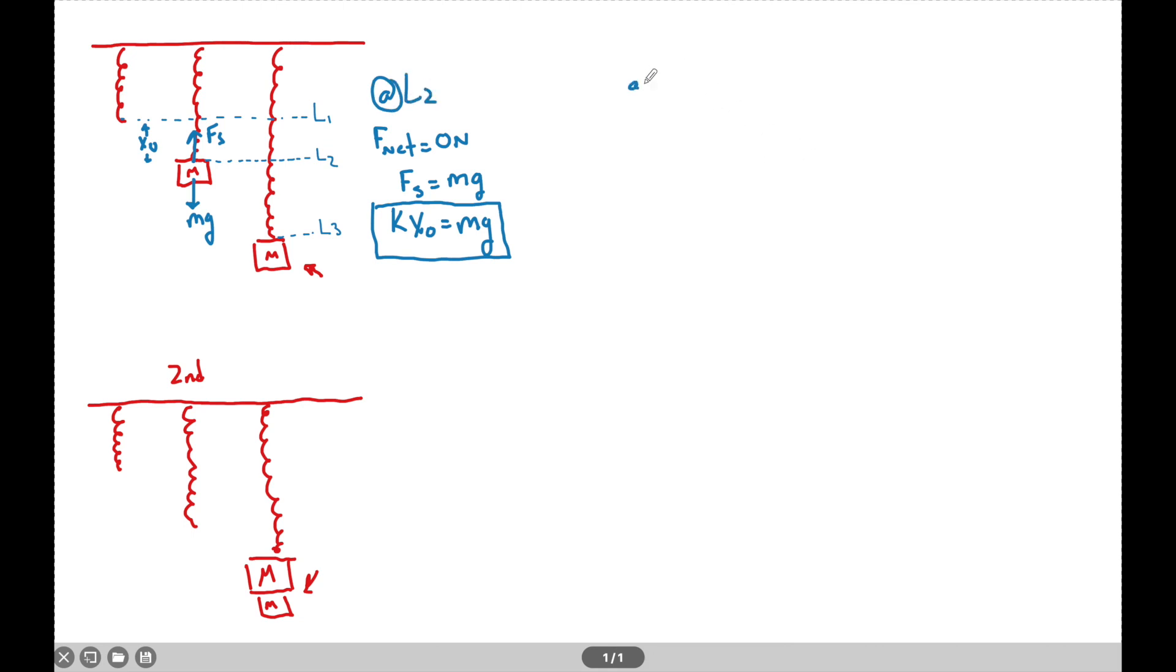But now at L3, when I'm way down here, I have FG and I have the restoring force. And let's say I pull this down an equal distance of X. But now Fnet is not equal to zero, right? Because it's going to accelerate out of this point.